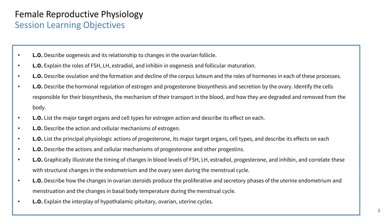In this session we're going to cover the following learning objectives. We'll describe oogenesis and its relationship to changes in the ovarian follicle. We'll explain the roles of FSH, LH, estradiol, and inhibin in oogenesis and follicular maturation. We'll describe ovulation and the formation and decline of the corpus luteum and the roles of the hormones in each of these processes.